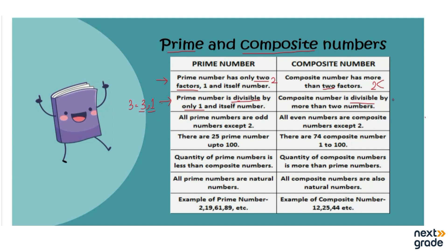If I take the composite number four, it does not have just two factors. Four multiplied by one equals four, and two multiplied by two equals four. So the factors are one, two, and four — that's three factors, which is more than two.